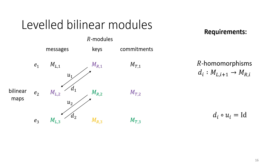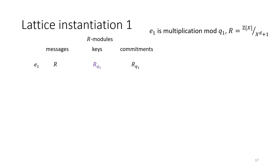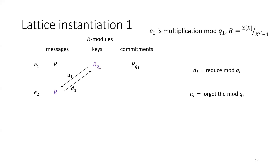These homomorphisms should cancel each other out. If keys are elements of Z_p, the U map can forget that you're working mod p and give you an integer, and then the D map can reduce mod p again. Our first lattice instantiation uses keys in a lattice-based ring working modulo Q1, and the keys become small elements in the message space for another commitment scheme by forgetting we're working mod Q1. For our next key space we choose elements modulo Q2 where Q2 is much bigger than Q1. The problem with this instantiation is that the moduli get bigger and bigger, causing problems when setting parameters.